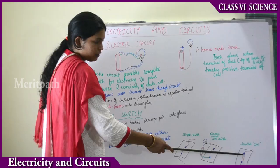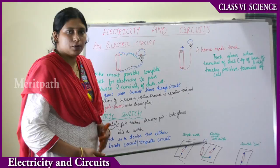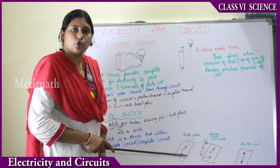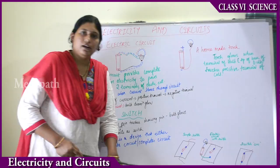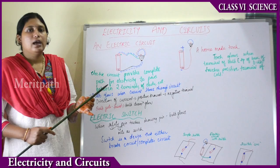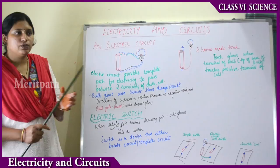When the safety pin is connected to the other end of the drawing pin, it is the switch-on position. When it is not connected, it is the switch-off position. In the switch-off position the bulb doesn't glow. Only when the safety pin touches the other end of the drawing pin is there a flow of electricity, the circuit completes, and the bulb glows. So the safety pin acts as a switch.